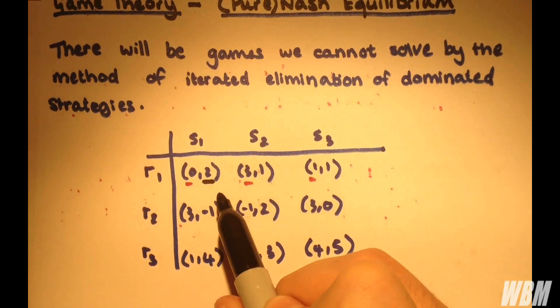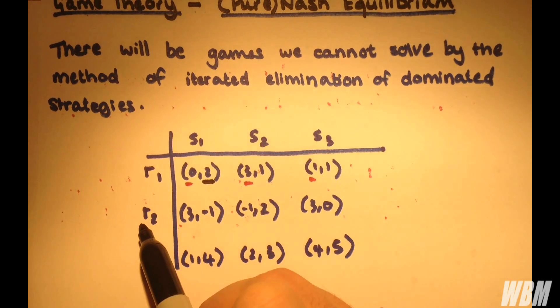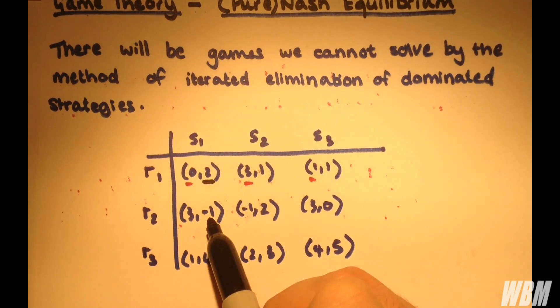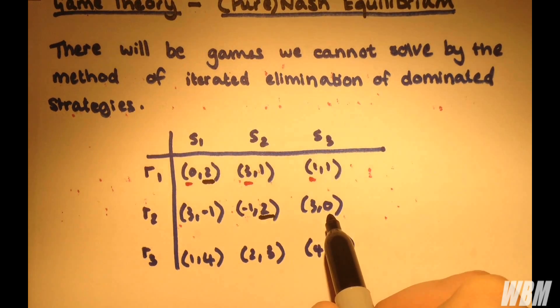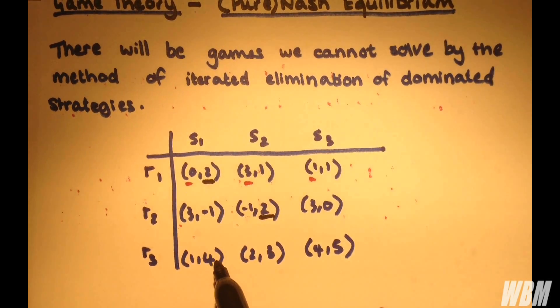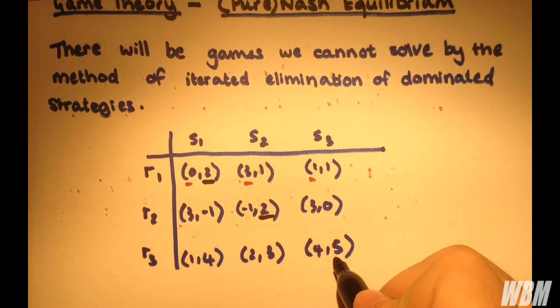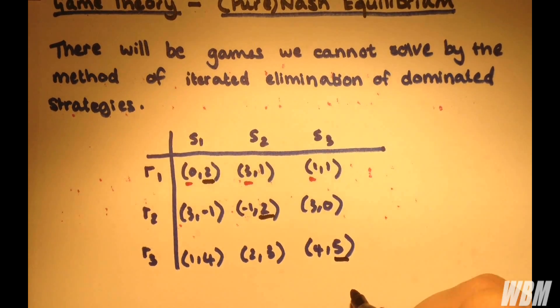Now the best response for player 2 for fixed strategy R2, is S2, because we have minus 1, 2, and 0. And obviously for a fixed strategy R3, well, we have 4, 3 and 5. So we highlight the 5 there.